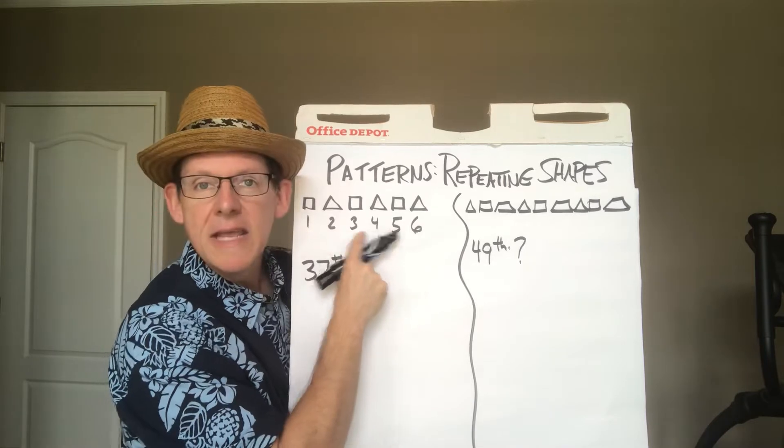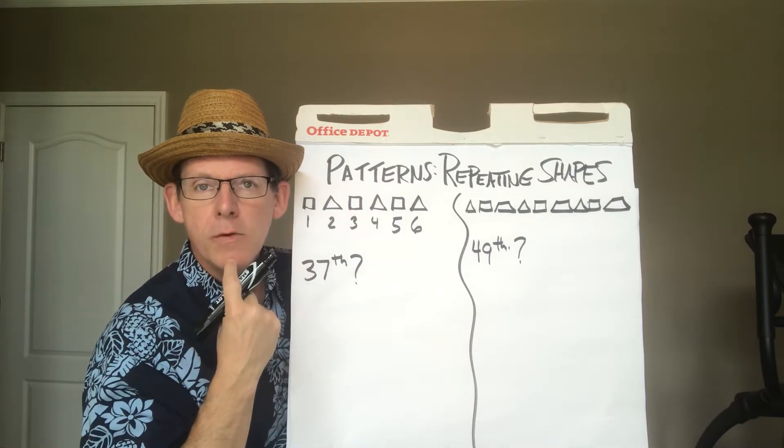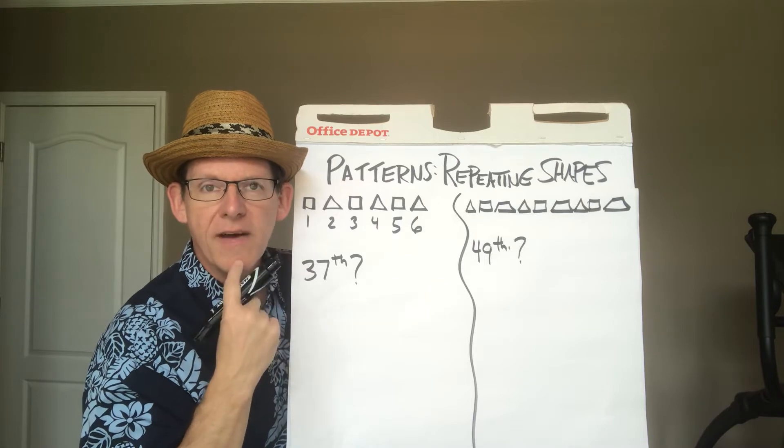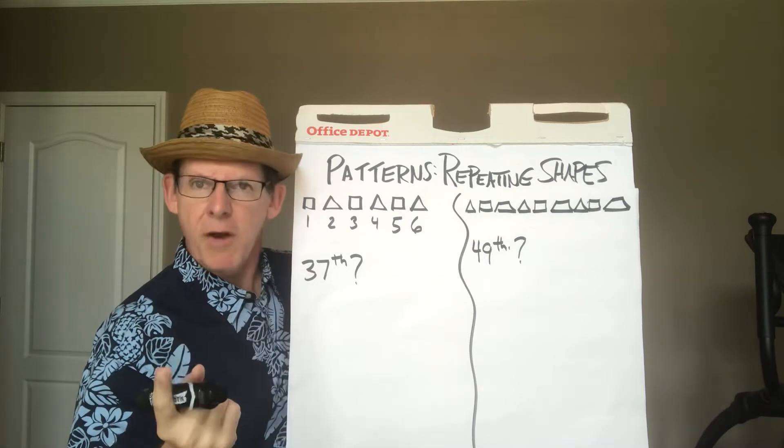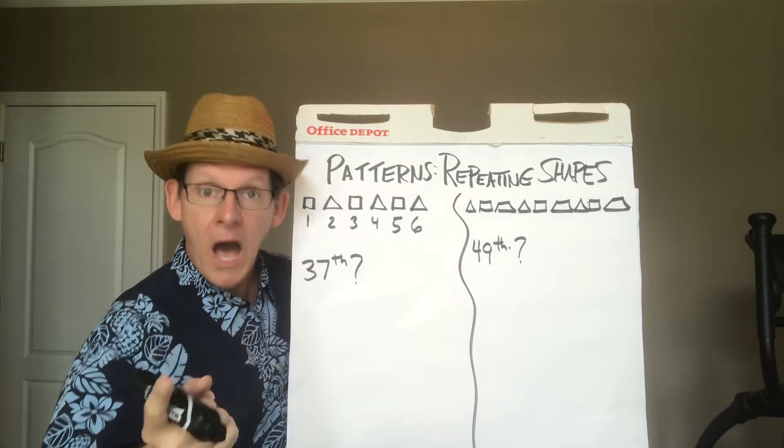One, three, five. What do you notice about the one, the three, and the five? That's right! They all are odds.